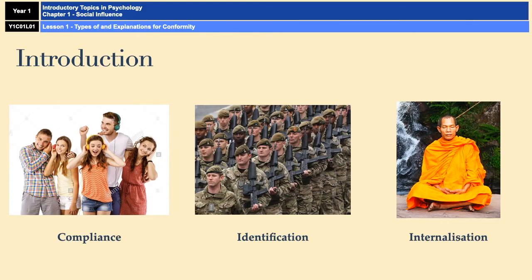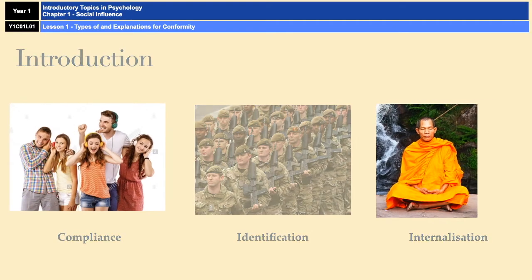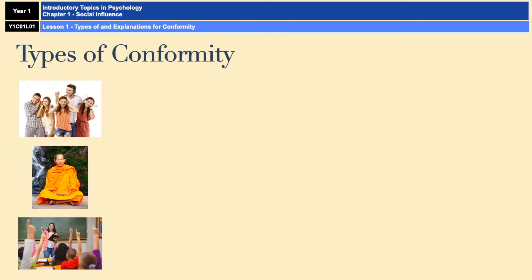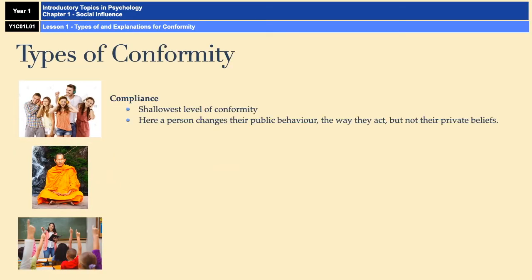I'll go through what they are quickly, and then I'll put up a note-taking slide — feel free to pause the video when I get to those. So first off, compliance is the shallowest level of conformity. When somebody complies, they change their public behaviour but they don't change their private beliefs. More often than not, it is a short-term change, and they do it because they want to be accepted or fit in with the group — they don't want to be the odd one out.